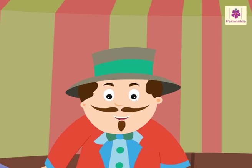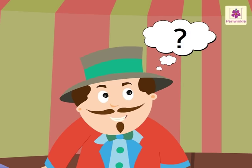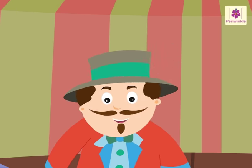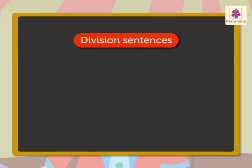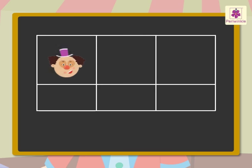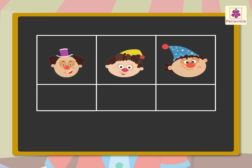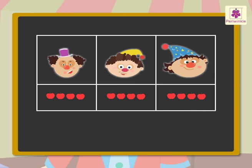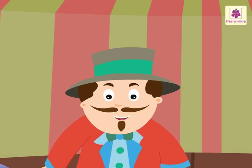We have a large number which we want to separate evenly into groups — what do we do? Bingo! We divide! Now let's understand how to write division sentences with the help of the division symbol. Let's take the help of Jumbo, Jimbo, Jojo and their apples to do this. Look how the apples have been divided between the three of them. We can write the division sentence in two ways.